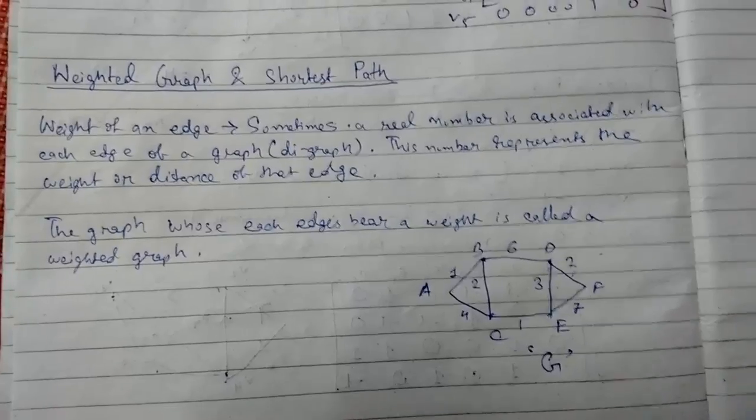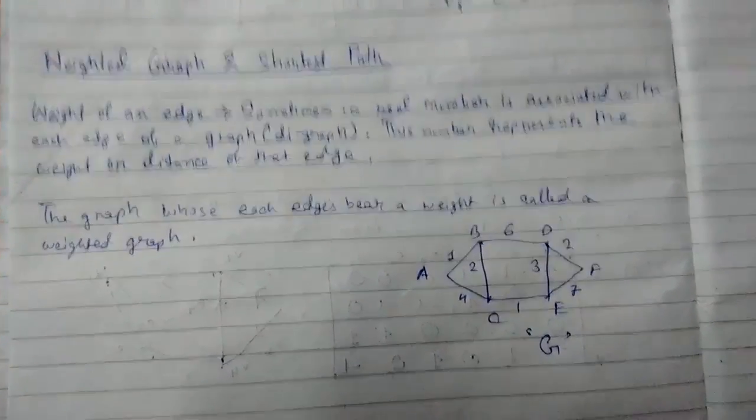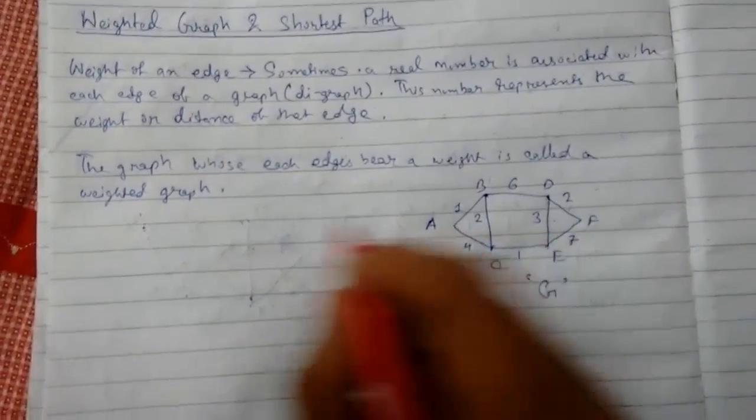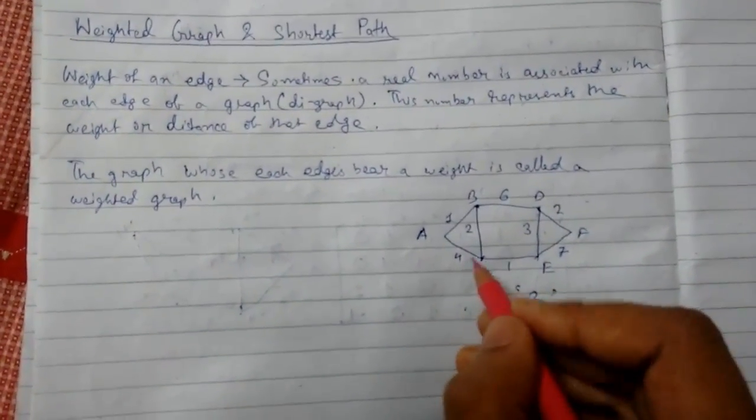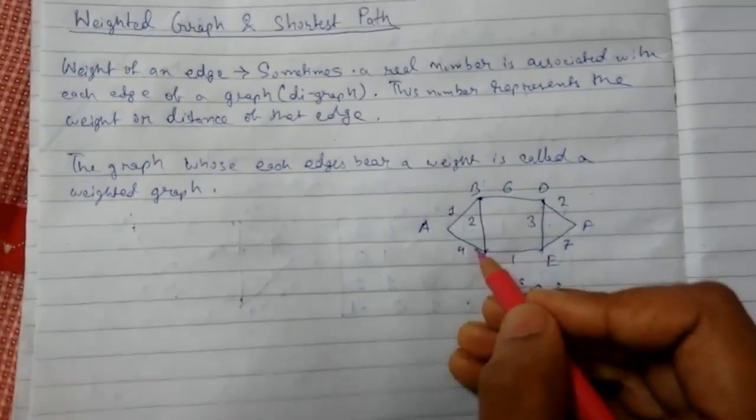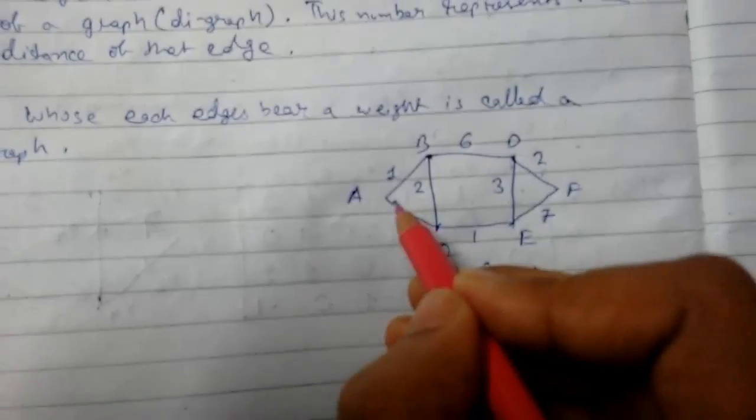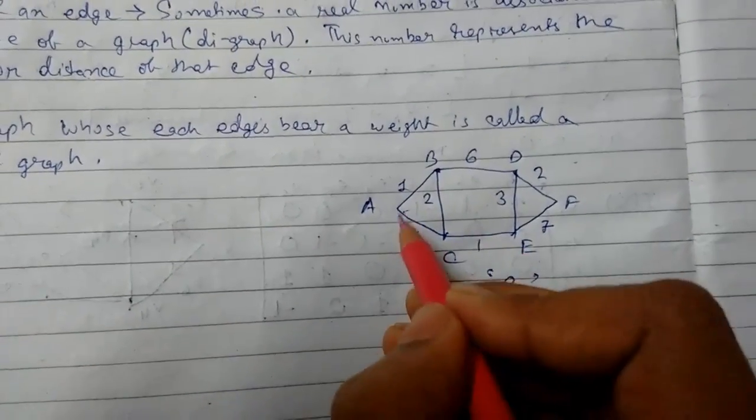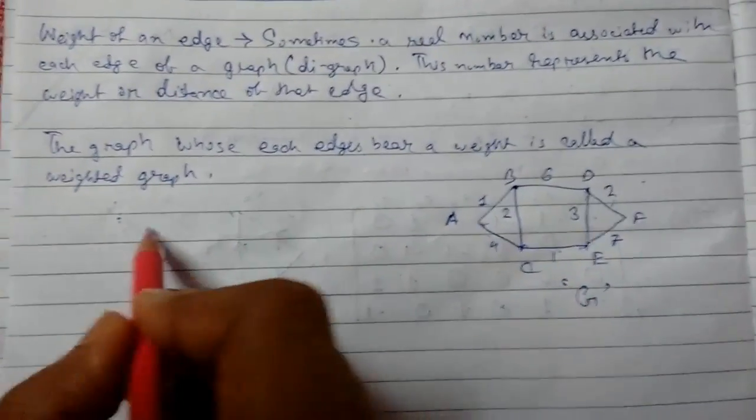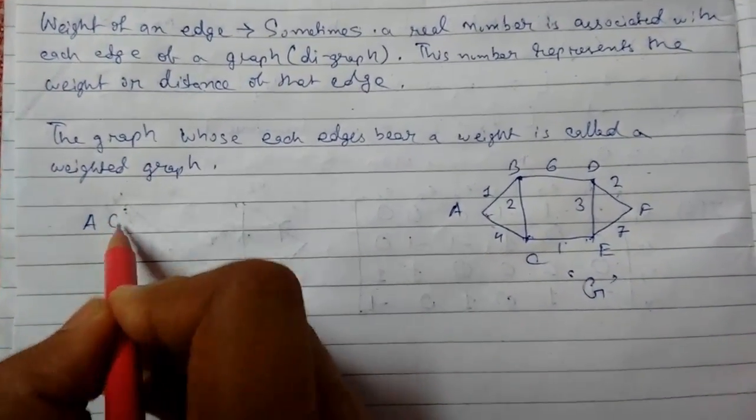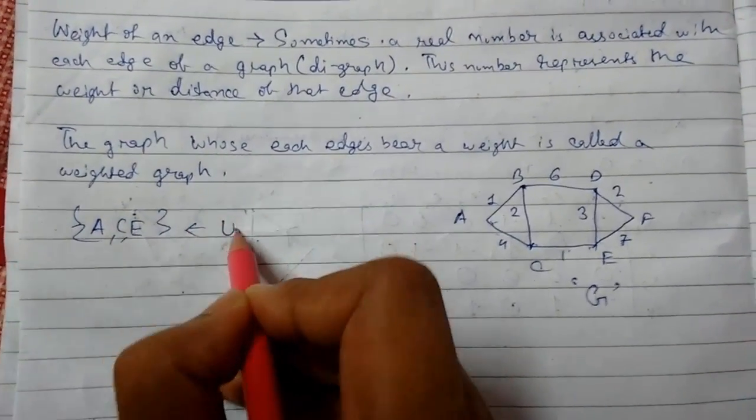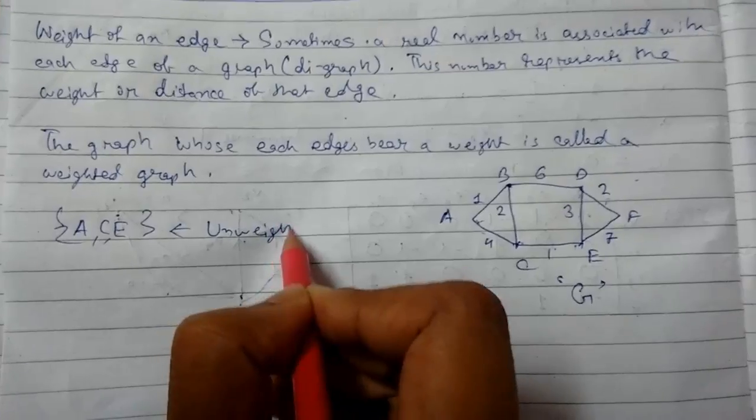These numbers are just magnitudes. Now we will see about shortest path. Previously, for a non-weighted graph, the shortest path between any two vertices has the minimum number of edges required to reach there. Suppose we want to go from A to E. The shortest path will be A to C, then C to E. So two edges. The shortest path will be something like A-C-E for unweighted or non-weighted graphs.